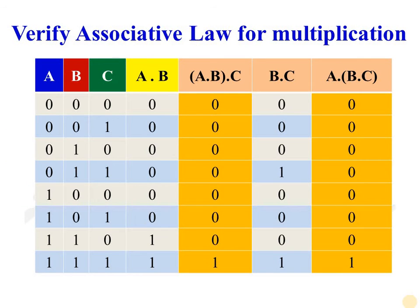This is a truth table with three variables A, B, and C. Various possible values range from 0 0 0 to 1 1 1. The fourth and sixth columns represent (A AND B) AND C and A AND (B AND C) respectively. If we inspect these two columns, we will find that the entries for all input combinations are the same — meaning these two columns refer to the same operation. So we can say (A AND B) AND C is equal to A AND (B AND C).